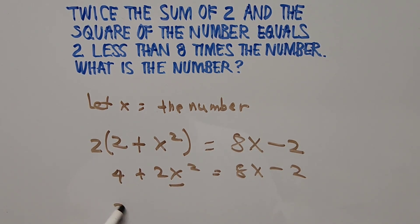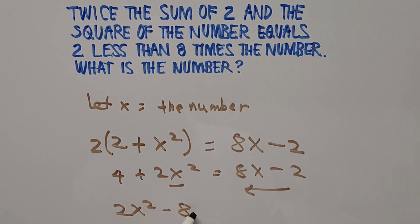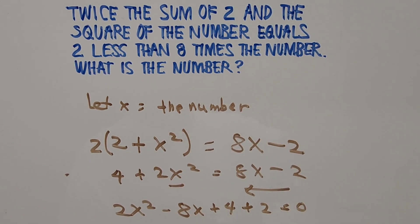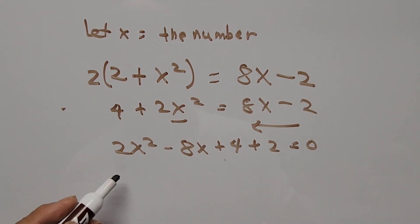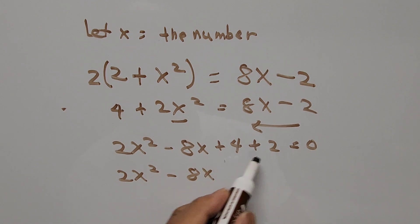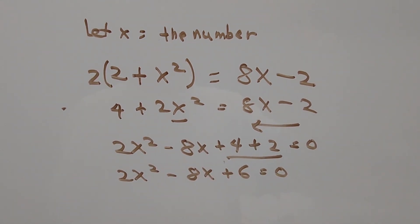Let's collect all terms on one side. We start with 2X squared, then bring 8X to the left as negative 8X, and bring the constants: 4 stays and negative 2 becomes positive 2. So we have 2X squared minus 8X plus 6 equals 0.